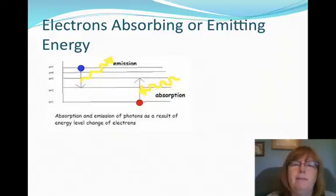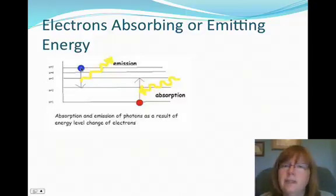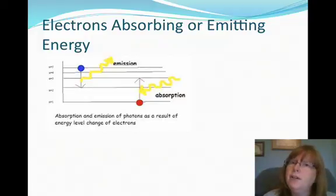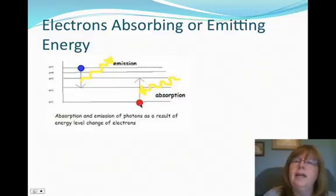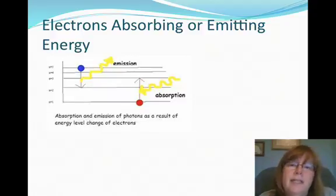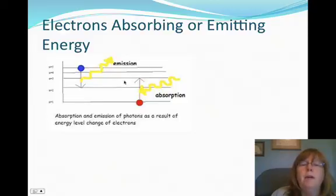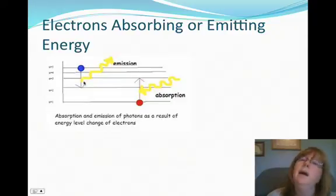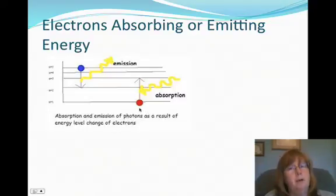Here's a little diagram of this happening. The little blue dot is an electron at energy level n equals 5, going back down to energy level n equals 2, and it emits a photon of light. For honors students, you'll learn how to calculate that wavelength. On the right, the red dot represents an electron at n equals 1, the ground state, which absorbs some energy and is promoted up to n equals 3. Energy is emitted when going from high energy to low energy; energy is absorbed when going from low energy to high energy.